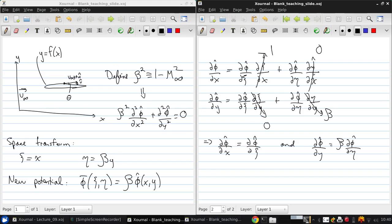Now, let's bring in our definition of our new potential. We can say that d phi hat dx is 1 over beta d phi bar d xi. And this is just using this definition. Similarly, we can write that d phi hat dy will just be equal to d phi bar d eta.